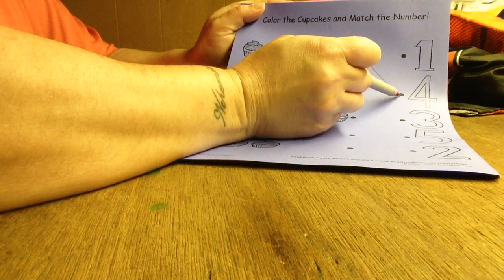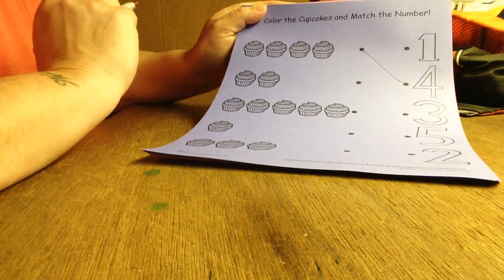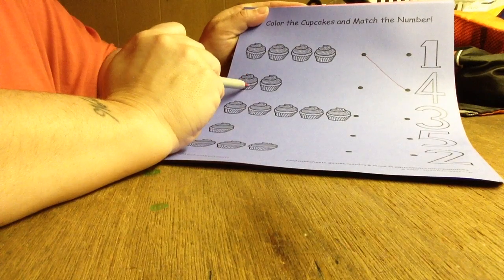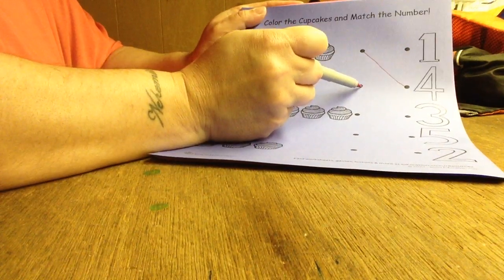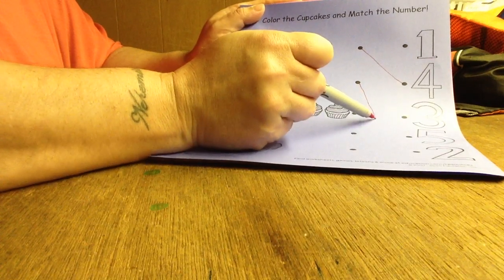So our second one is one, two. We have two cupcakes, so you're going to take a line from the dot and go all the way down here to the number two. All right, we have one, two, three, four, five. We have five cupcakes.